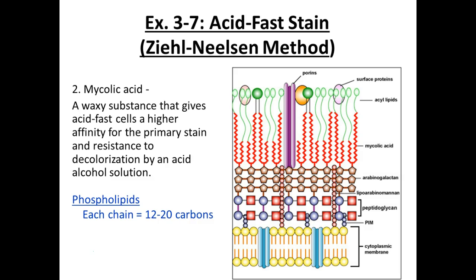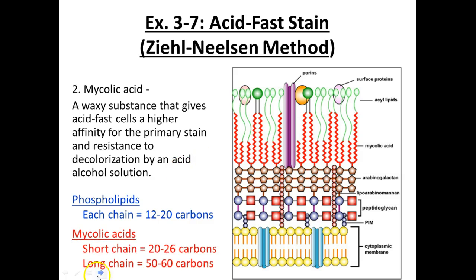The phospholipids — each chain could have 12 to 20 carbons — are really large molecules, these mycolic acids. Short chains run from 20 to 26 carbons, long chains 50 to 60 carbons — lots of really big, huge molecules.